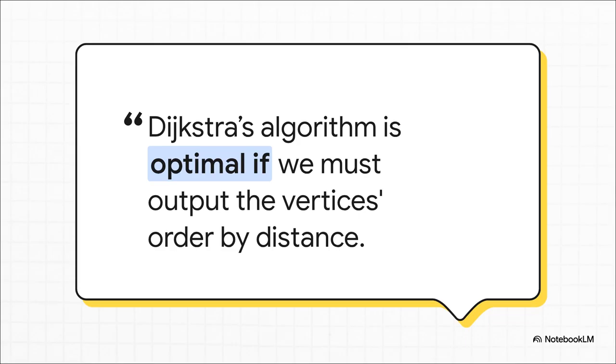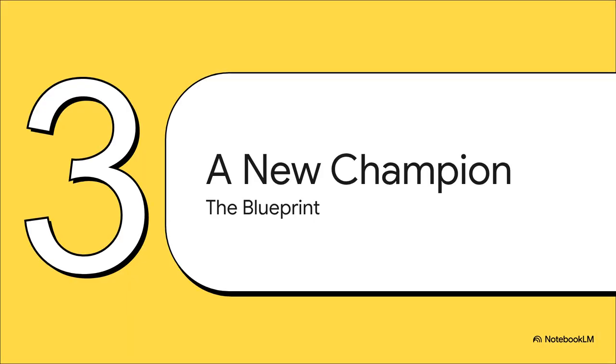A 2024 paper basically proved it. Look, if you absolutely must have a list of all the destinations perfectly sorted by distance, then yeah, you can't do better than Dijkstra. But the researchers behind this new discovery saw a tiny bit of wiggle room in that statement. They asked, what if you don't need the nicely sorted list? What if all you need are the final distances themselves? That one question changed everything.